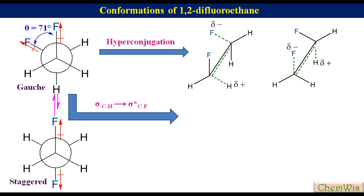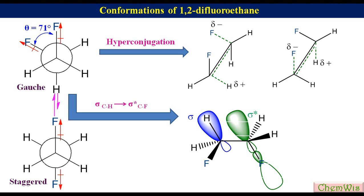To understand this stabilizing interaction, let's make the Newman formula of gauche conformation of 1,2-difluoroethane. This is the filled CH sigma bonding orbital on the left carbon, this is the empty CF sigma star antibonding orbital on the right carbon, and this is the stabilizing interaction between the filled CH sigma bonding orbital and the empty CF sigma star antibonding orbital.